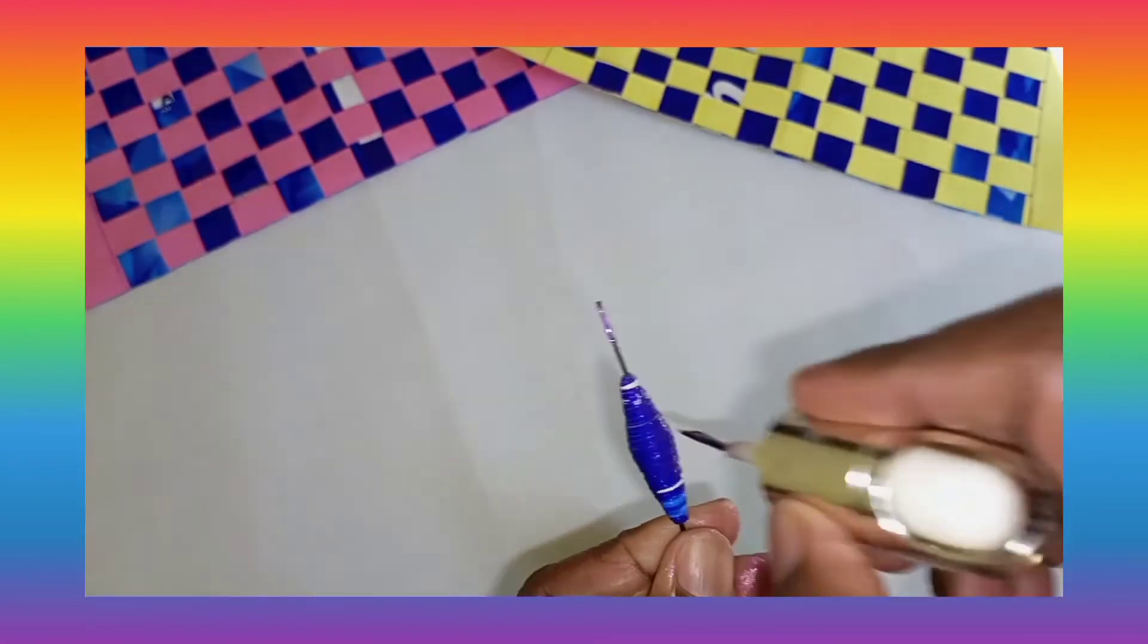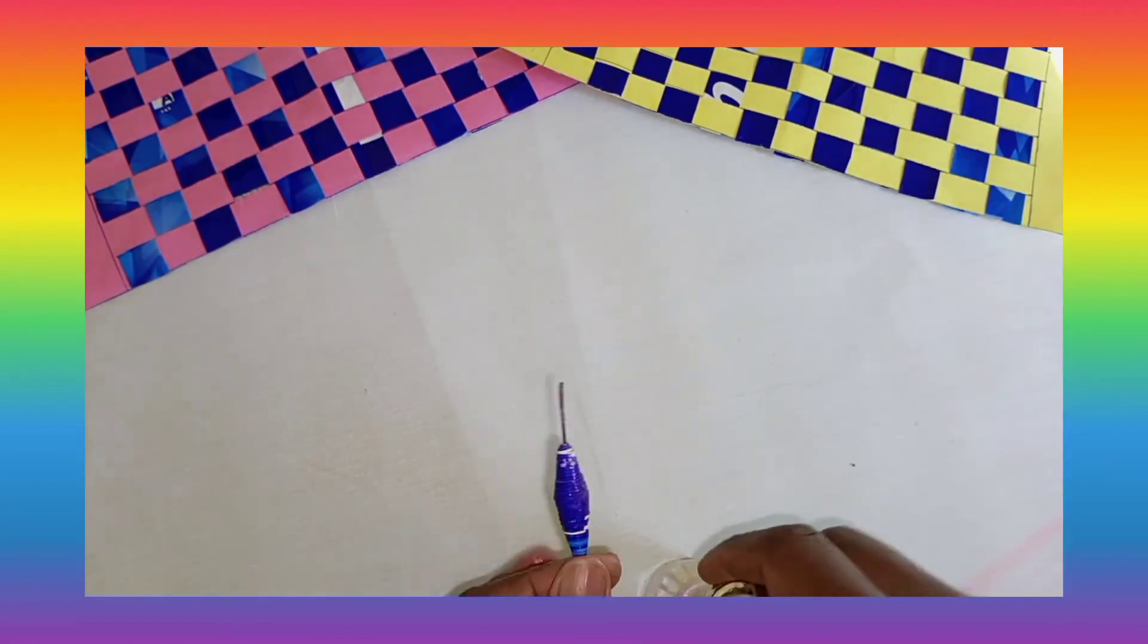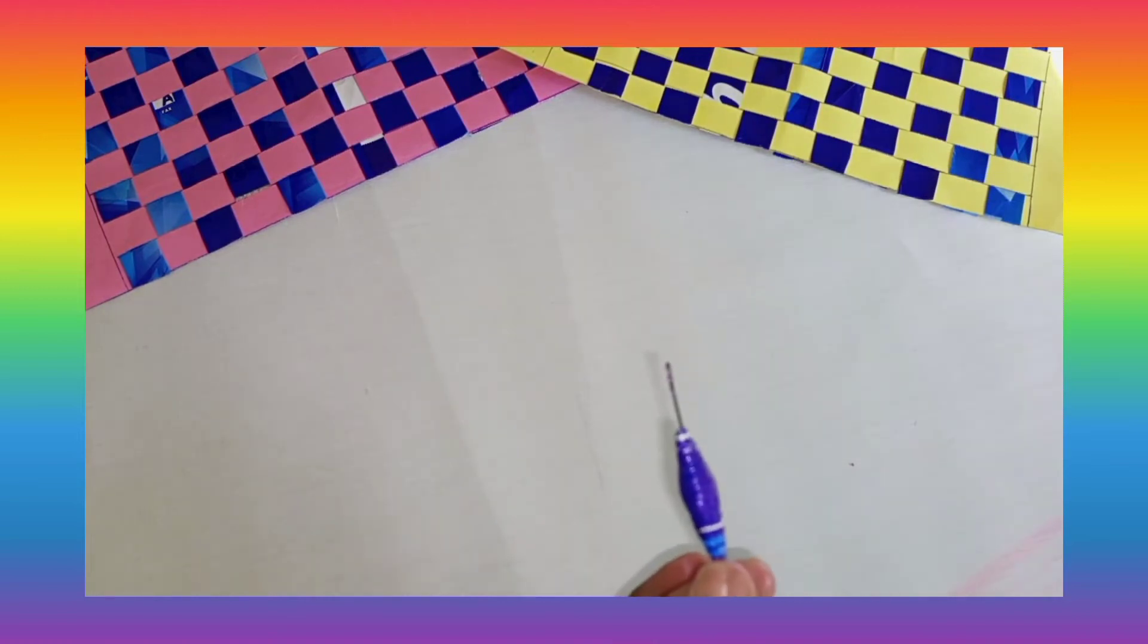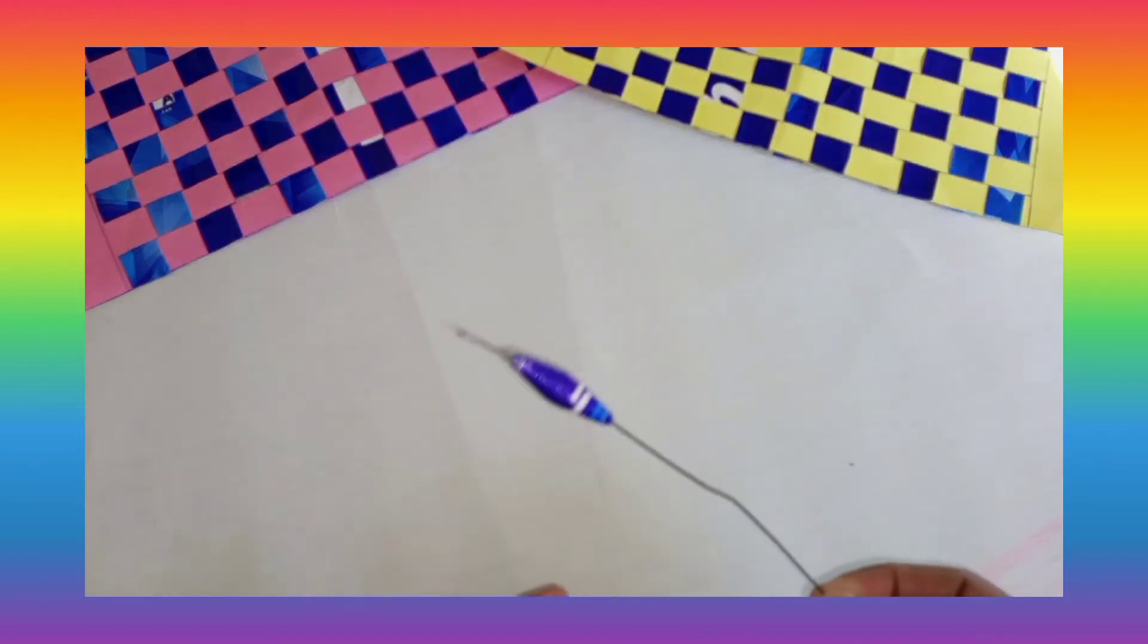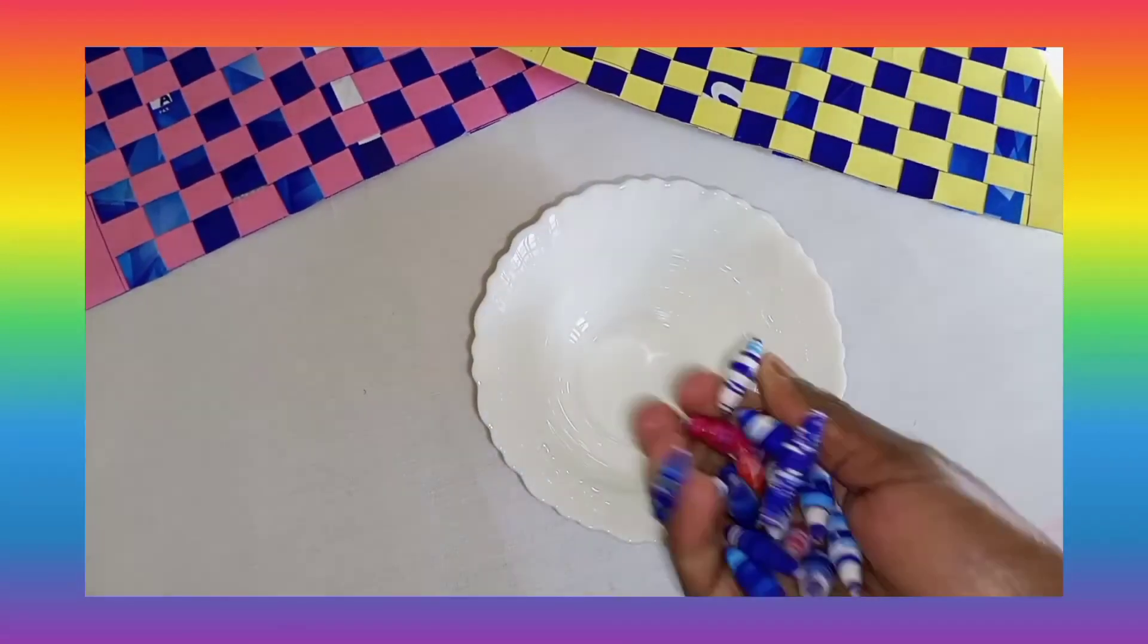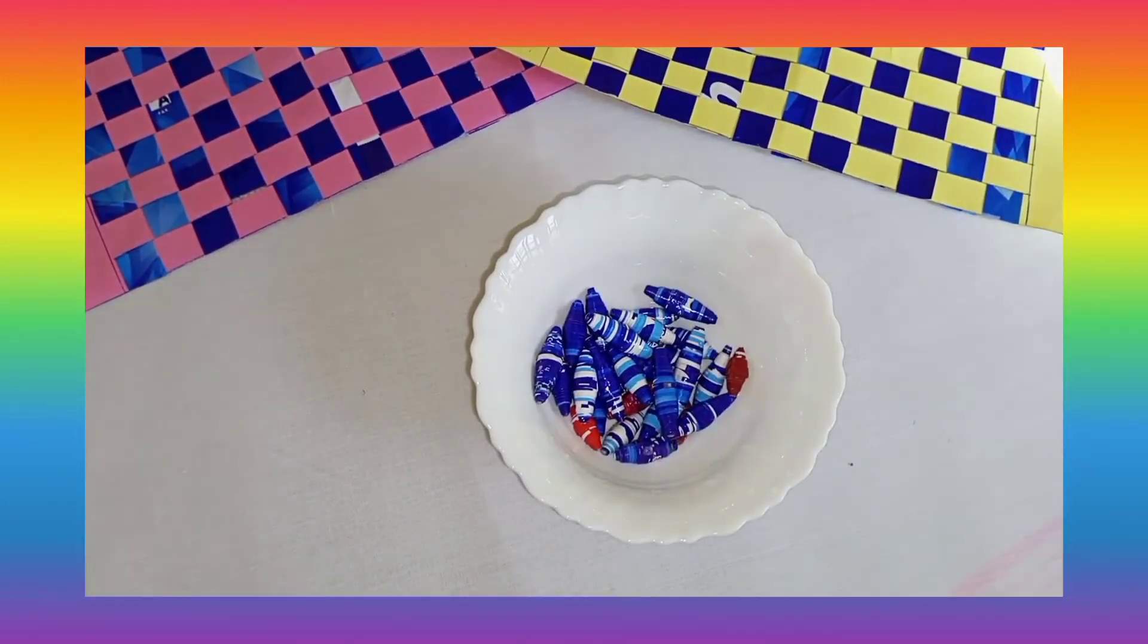So apply the nail polish and allow it to dry. The nail polish dries very fast, so within five minutes it will be done. Look at the beads that we have made. How do you like them?